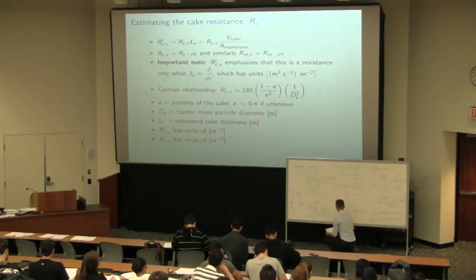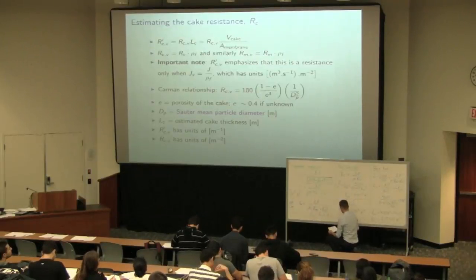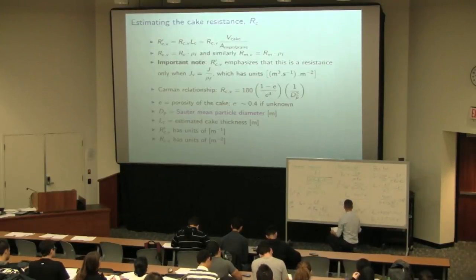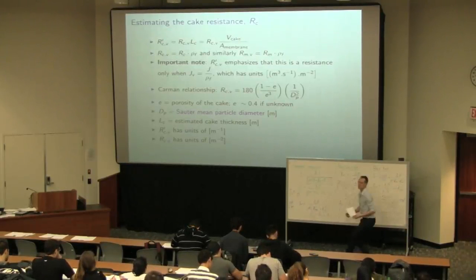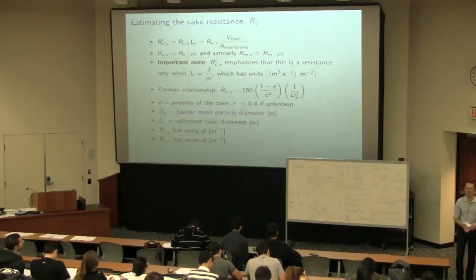And then, the estimate of the cake thickness is RCV dash divided by RCV. Now, we know both of those terms and it would come up to 1.7 millimeters. 1.7 millimeters would be an estimate of the cake thickness.